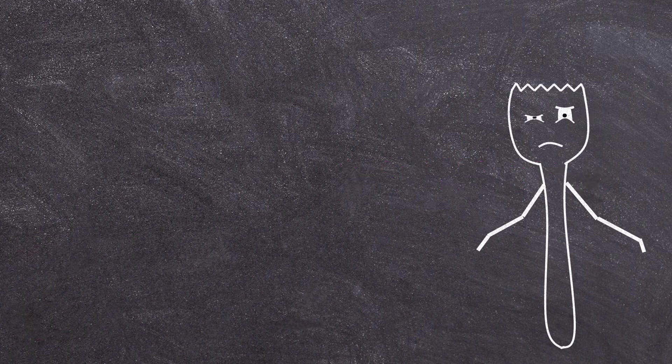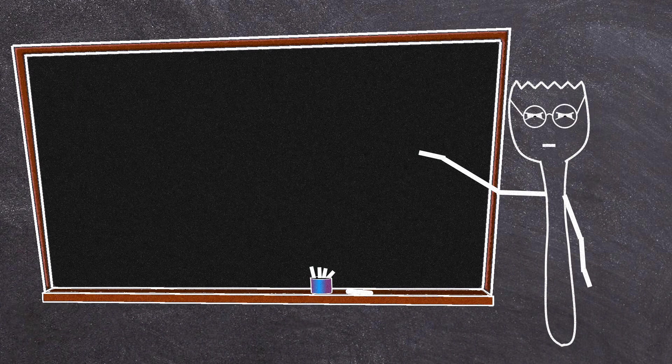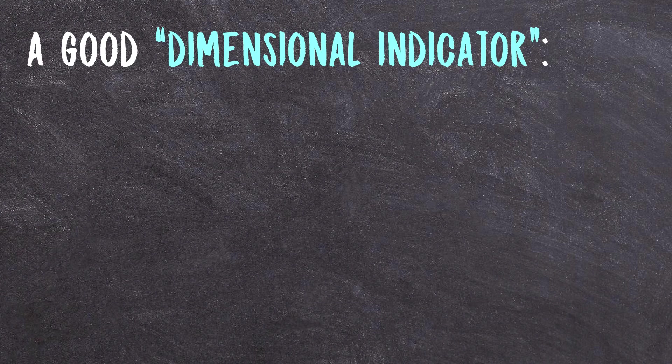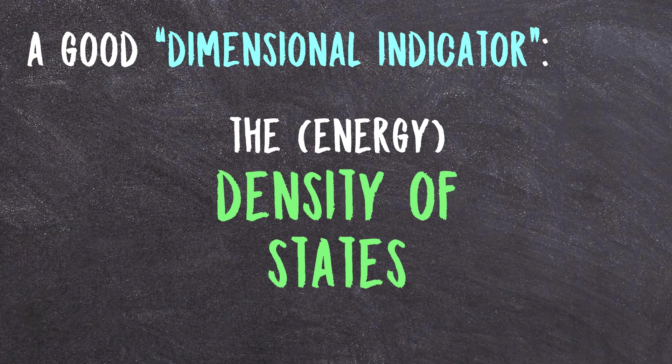Now to understand why this happens, we first need to come up with a sort of indicator or definition for what it means for the laws of physics to play out in a certain number of dimensions. And a nice quantity for this is what is called the density of states.